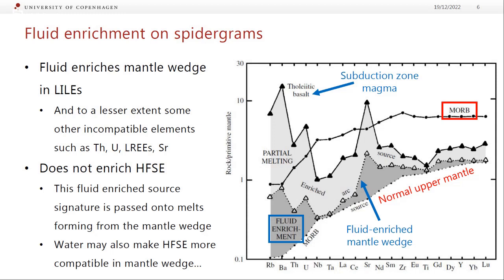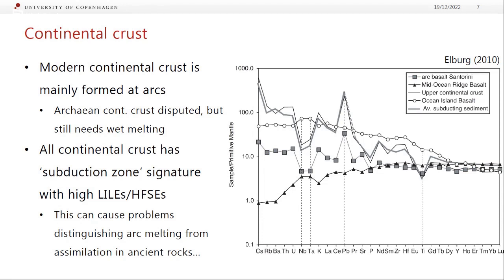Water might actually make niobium and tantalum more compatible. The reason is that if you form rutile in the mantle wedge — a titanium oxide mineral — you can hold the niobium and tantalum back in the rutile even though they're usually very incompatible. There's a little bit of a complication: modern continental crust is mainly formed at arcs. When we go back to the Archean, when quite a decent amount of continental crust was formed, the exact mechanism is disputed but it's still wet melting. So basically all continental crust ends up having a subduction zone signature.